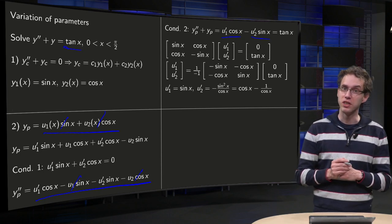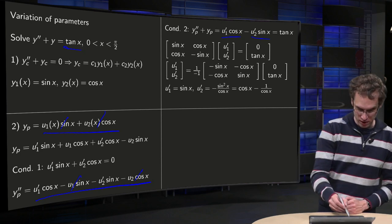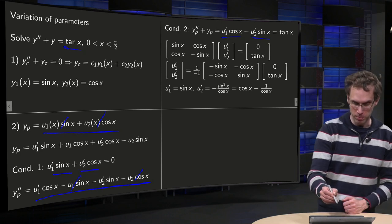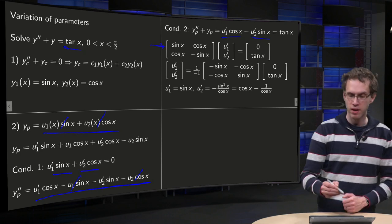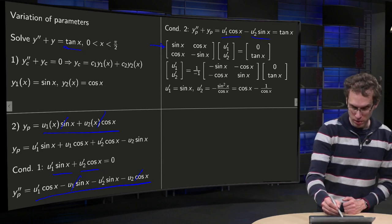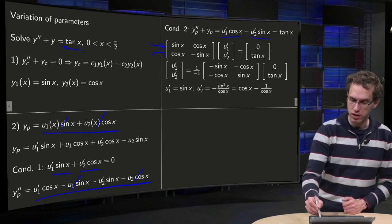Well, we can summarize these two conditions into a matrix equation. The first one has sin(x)·u₁' + cos(x)·u₂' = 0, that's this one. And the second has u₁'cos(x) - u₂'sin(x) = tan(x), equals this one.